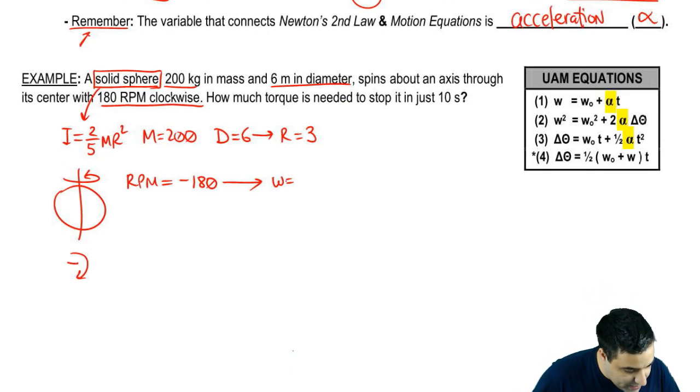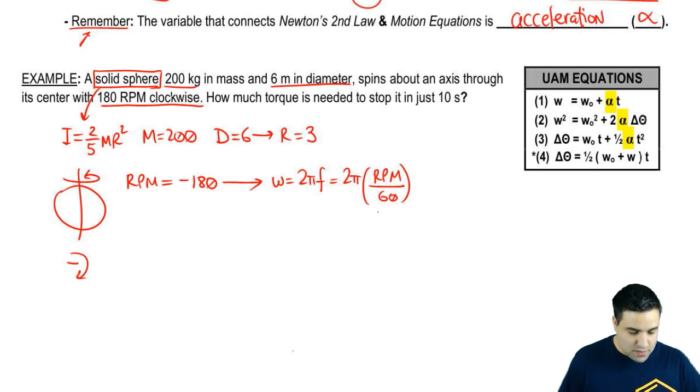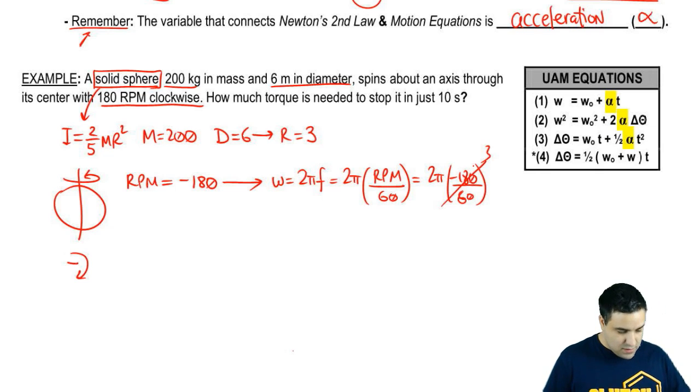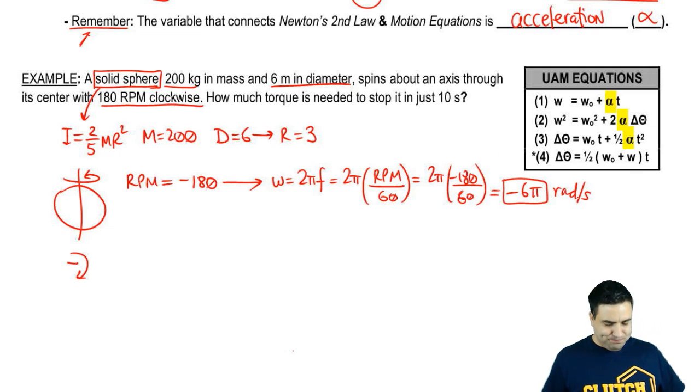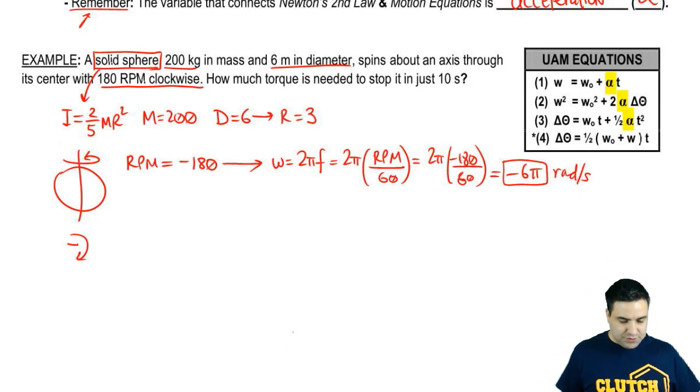Remember, as we did in rotational motion problems, whenever you're given RPM, a vast majority of the time you're going to immediately convert that into omega, because most of our equations have omega, little w, but not RPM in it. So the next thing I'm going to do here is convert this into w. Omega equals 2 pi f, or 2 pi, remember, f frequency is RPM over 60. So this is going to be 2 pi negative 180 over 60. This is going to be a 3 right there, which means the whole thing will be negative 6 pi radians per second. That's the initial speed.